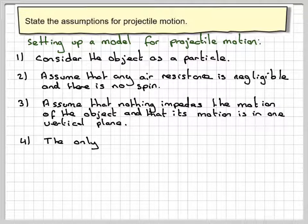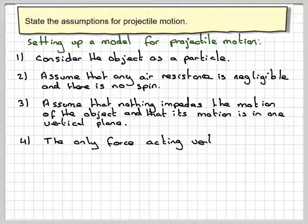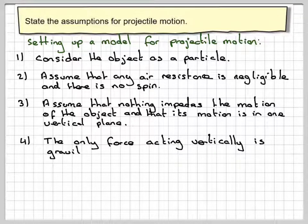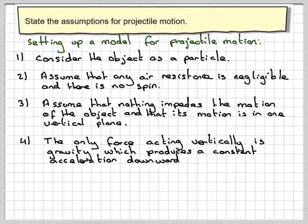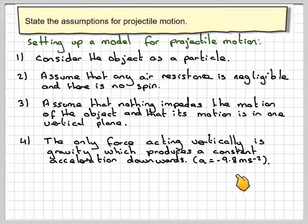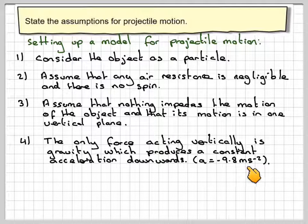4. The only force acting vertically is gravity, which produces a constant acceleration downwards, i.e., A is equal to minus 9.8 metres per second squared.